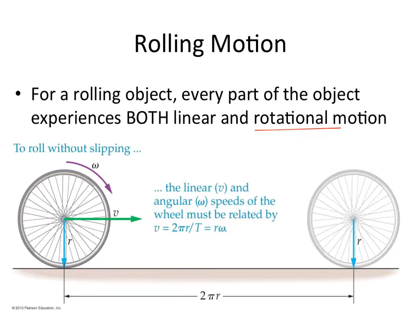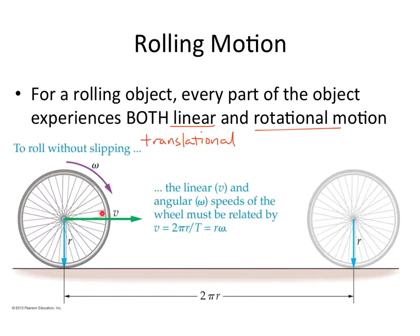Rotational motion is what we've been talking about, and linear motion — sometimes called translational motion. I prefer 'linear' myself, just because if we talk about different kinds of motion and energy in the future, I prefer to have a subscript L rather than T. But anyway, this wheel right here, unlike a record player or a CD that just sits there and spins, not only spins but also moves forward.